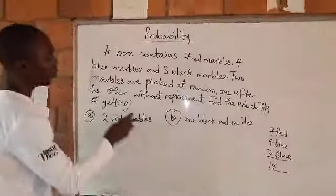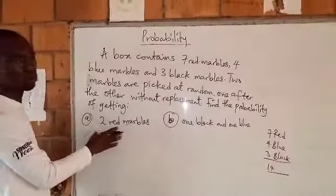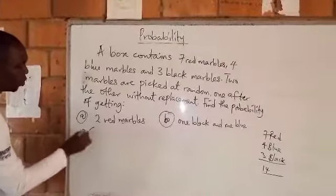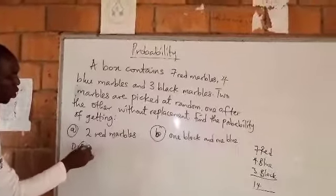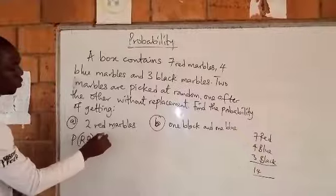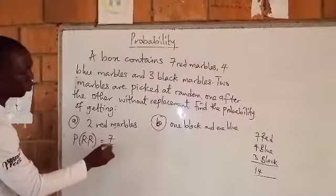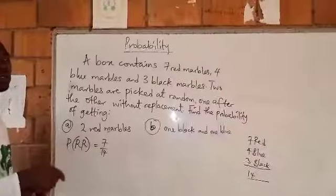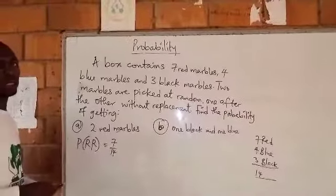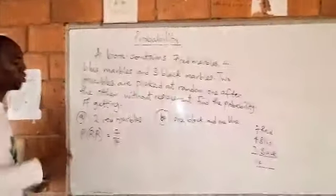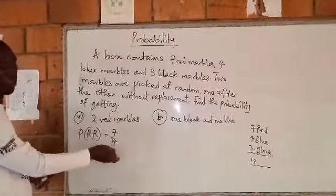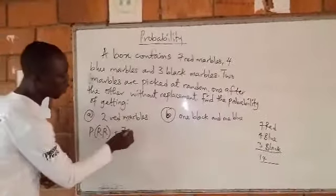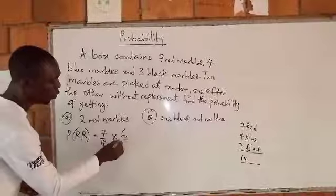The probability of having red marbles is probability of red, red. That is 7 over 14. When you have red and red, 'and' means multiplication. So 7 over 14 is probability of getting a red. The next one will be 6 over 13.